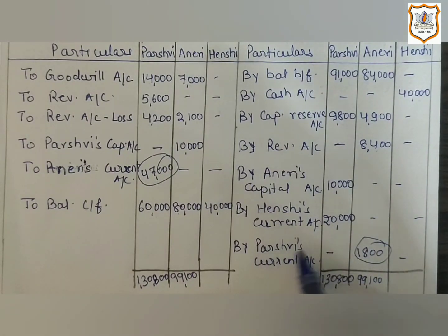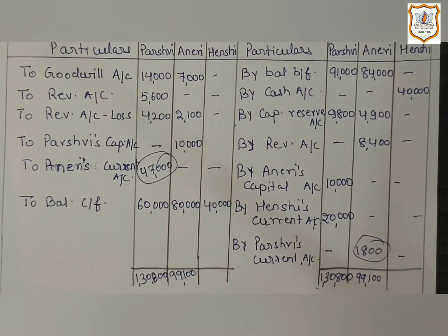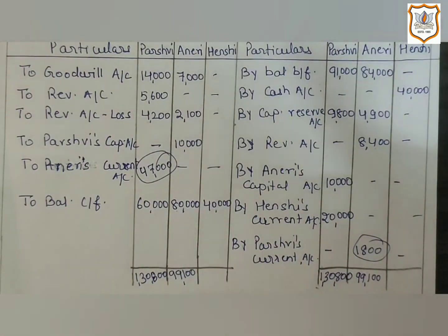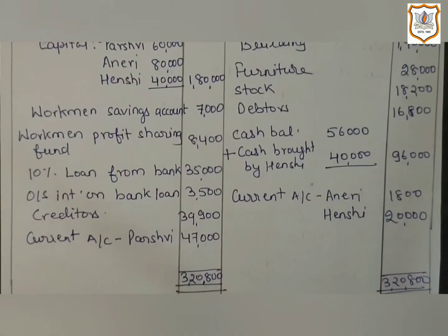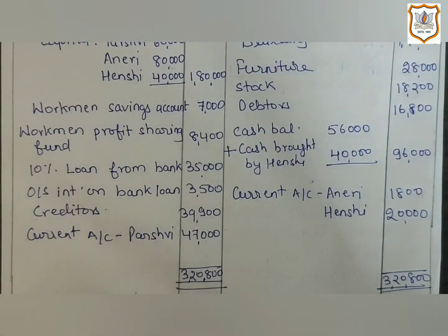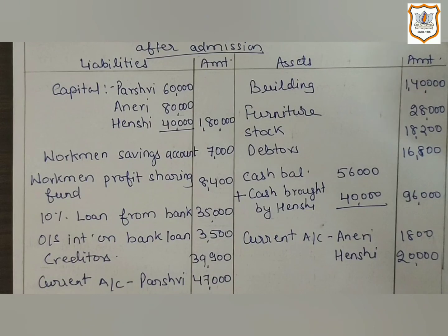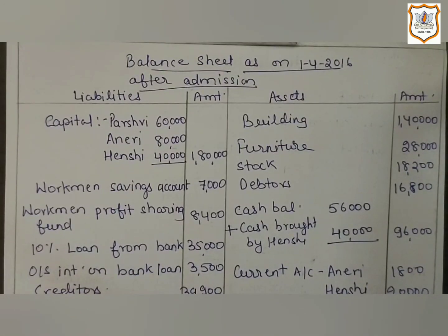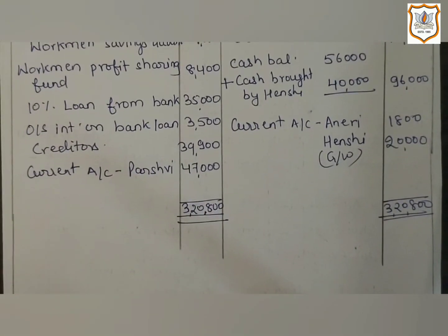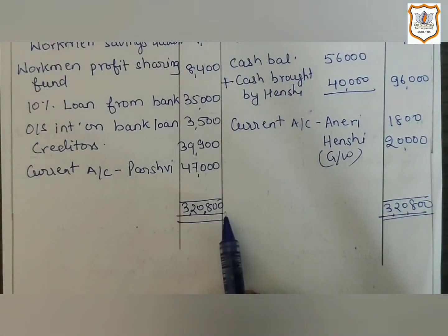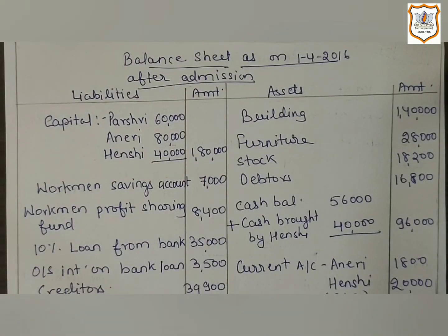We write here 'by Parswee's Current Account.' The debit balance of the current account will be shown on the asset side of the balance sheet and the credit balance on the liability side. The debit balance of 1,800 is on the asset side, and the credit balance of 47,000 appears on the liability side. The balance sheet tallies at 3,20,800. This completes question number 16. Thank you very much.